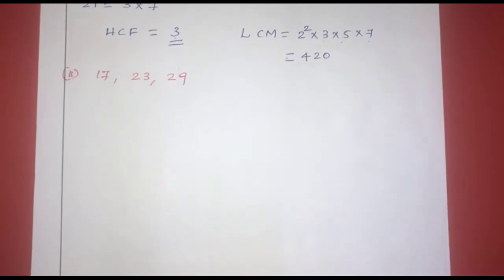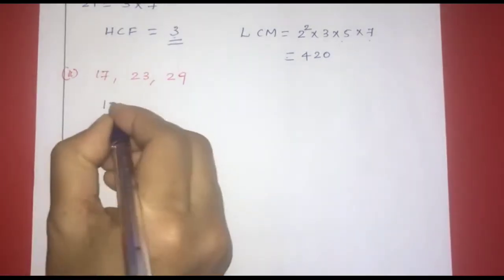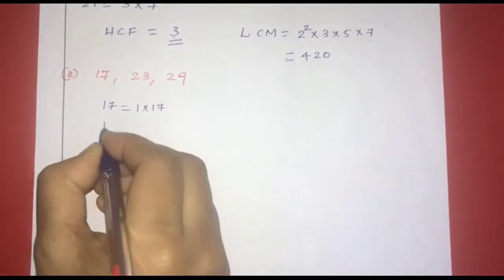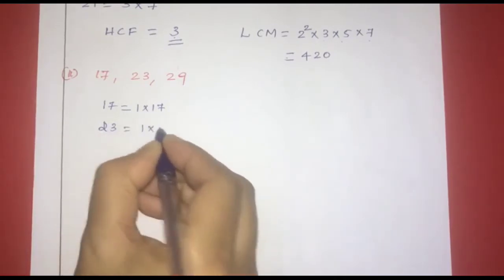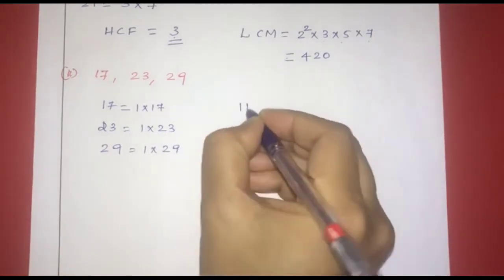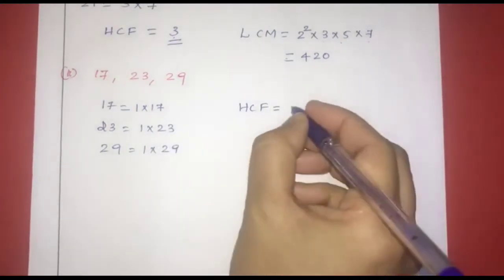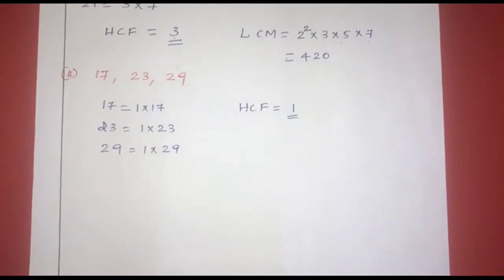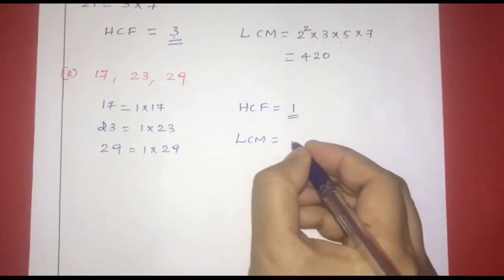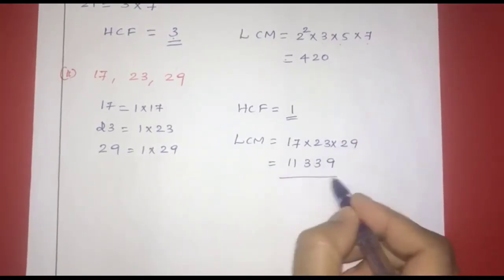The next set is 17, 23, and 29. They are all prime numbers. 17 = 1 × 17, 23 = 1 × 23, 29 = 1 × 29. Since they are all prime, the highest common factor HCF is 1. For LCM, since all are prime numbers, LCM = 17 × 23 × 29.